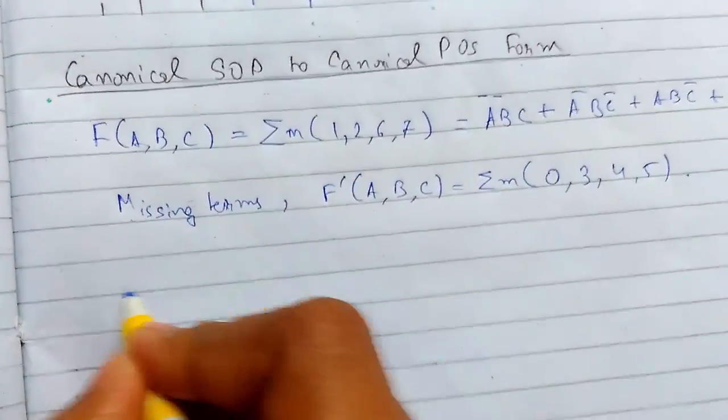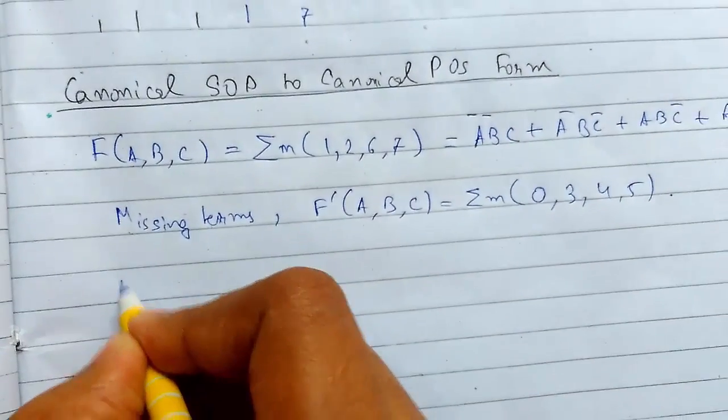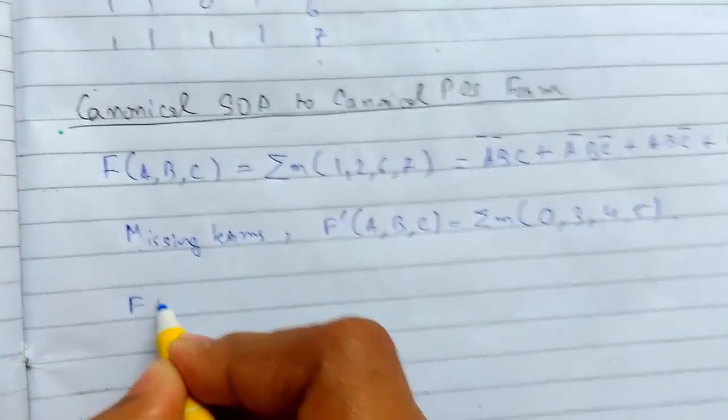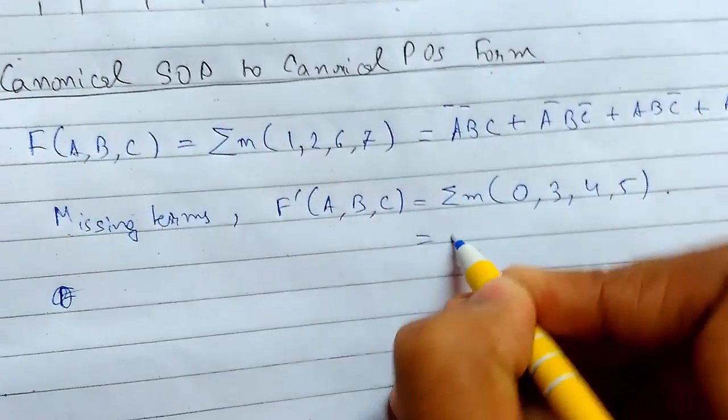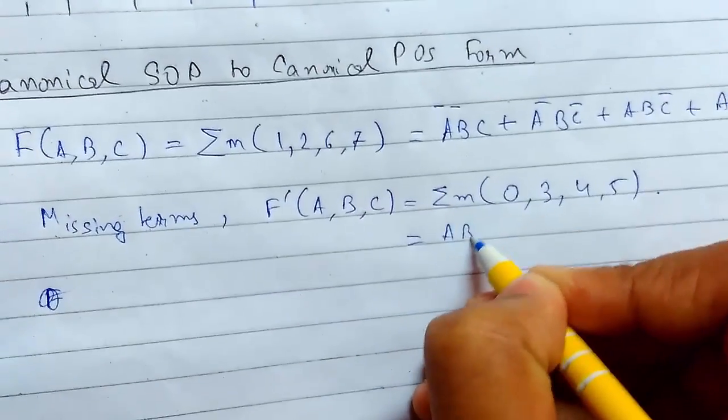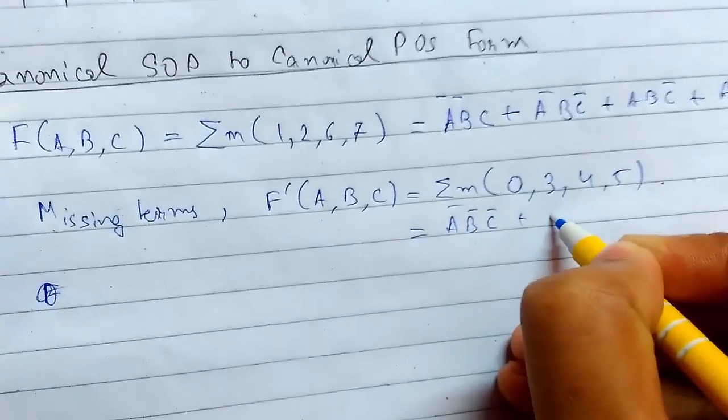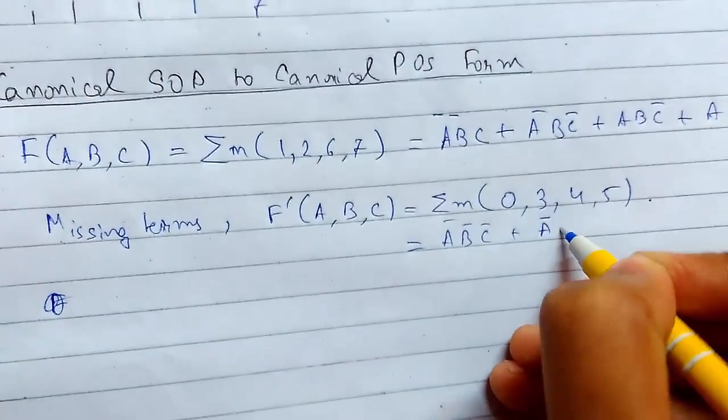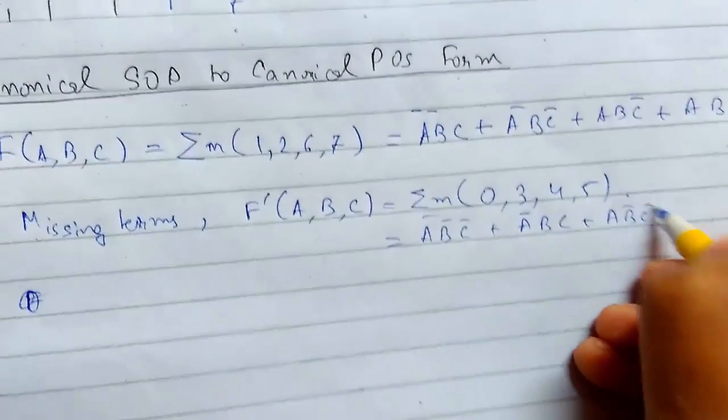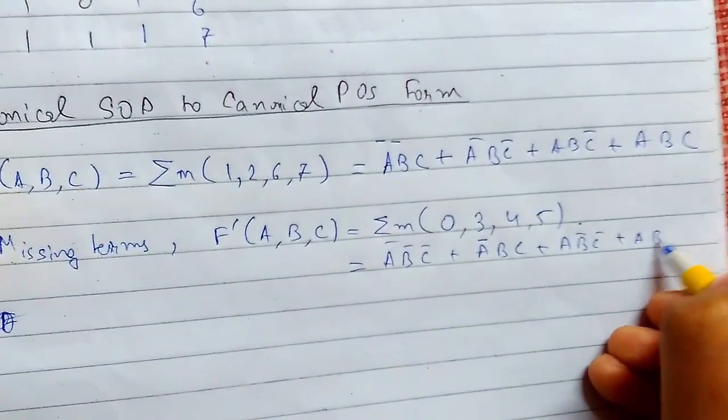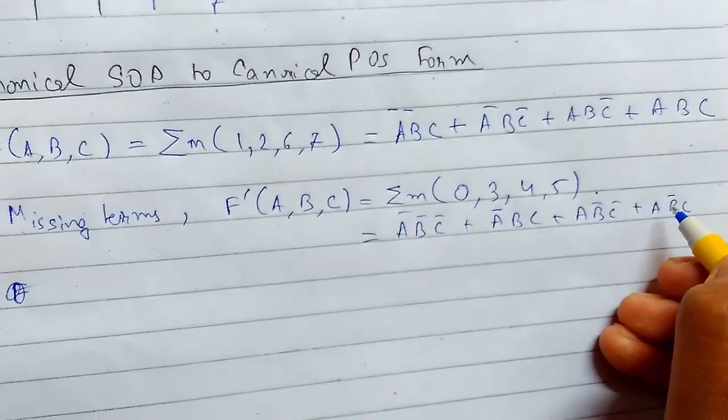So now to find this, I will write the variable form. This will be ABC, this will be A̅BC, this will be ABC̅, and so on like this for all the terms.